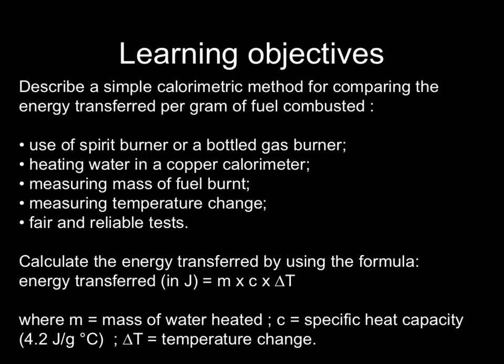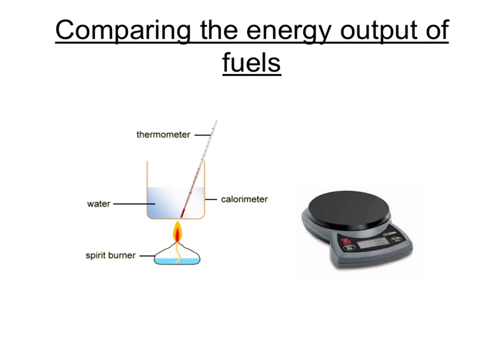In chemistry we tend to use specific heat capacity in grams per degree Celsius, whereas in physics we use it with kilograms. The equipment that you would use would involve a copper calorimeter suspended above a spirit burner containing the fuel.